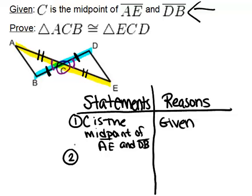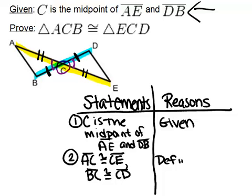Now based on the given information we know two things. We know that AC is congruent to CE and that's because C is the midpoint of AE. And also we know that BC is congruent to CD. And the reason we know those things is because of the definition of midpoint. Because C is a midpoint it creates those two pairs of congruent segments.